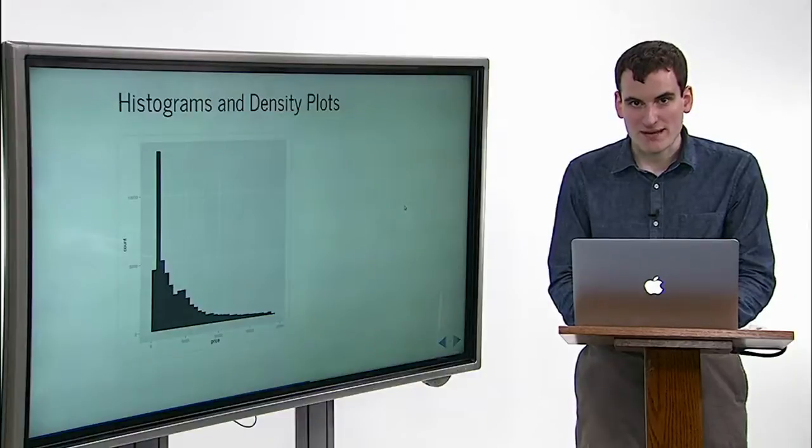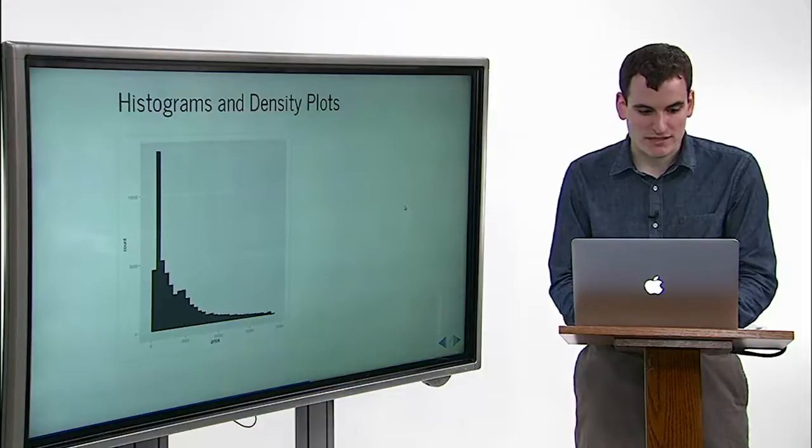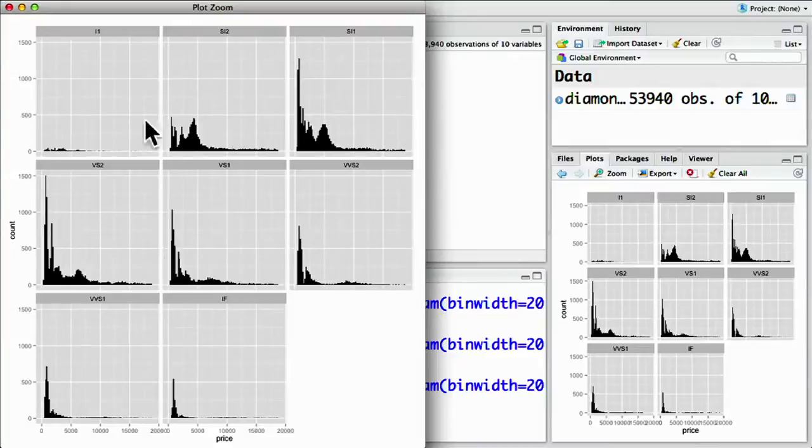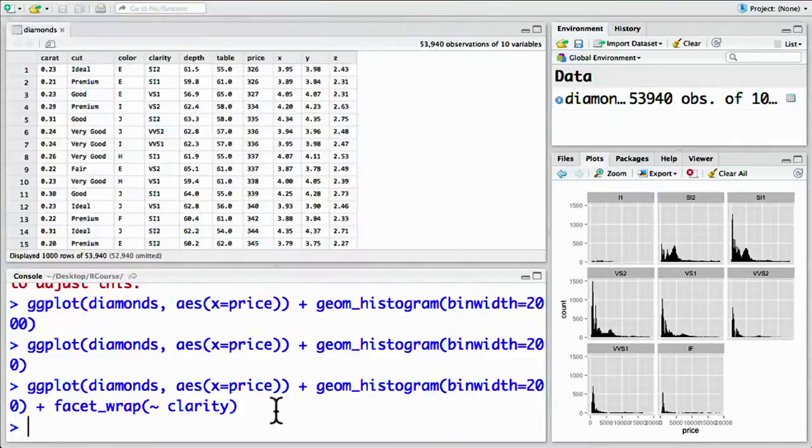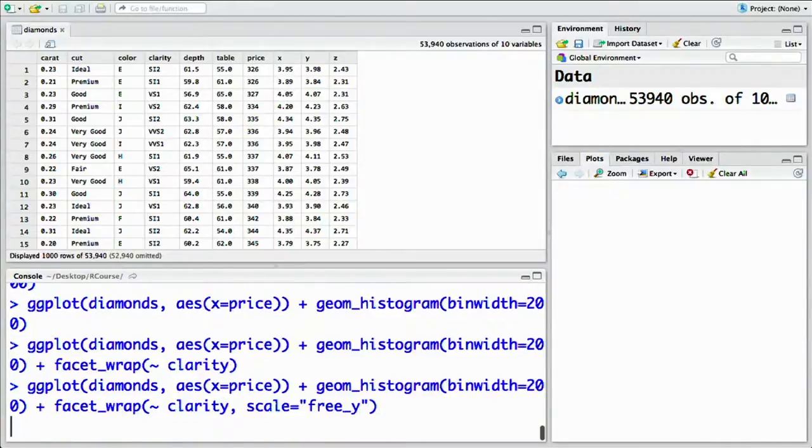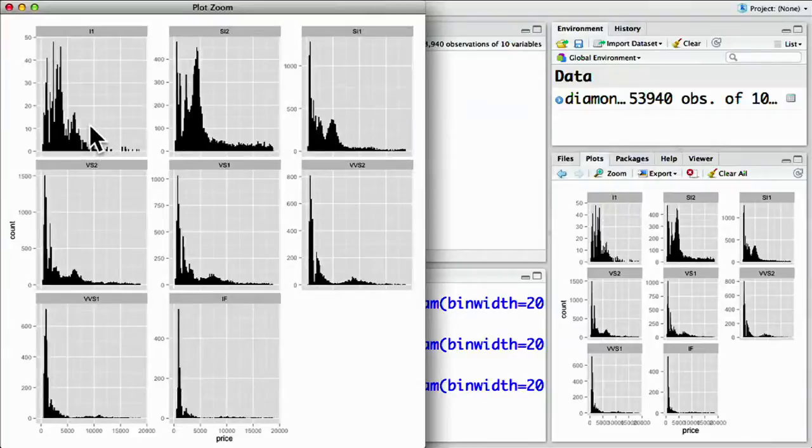Each of these subplots shares the same y-axis, which might make it hard to interpret the frequencies. Some subplots have far more points than others. So to free up these y-axes so they can be different between the graphs, we add an option to facet_wrap. In this case, scales equals, and then in quotes, free_y. Notice that each of the subplots now has a different y-axis—some of them going up to 50, some up to 1,000, depending on what's appropriate for that subplot.